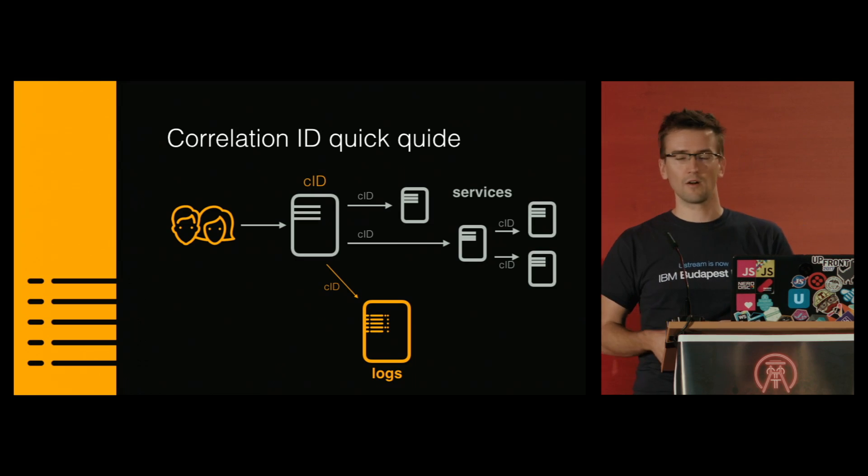They always pass on this correlation ID to the other services. This way, all these services can do their logging to the same logging service, and at the end, if there is anything wrong, we will see the whole flow of the single entry point where the user came to our service. You can see the whole process later in the logs and see the correlation between them — this is why it's called the correlation ID.